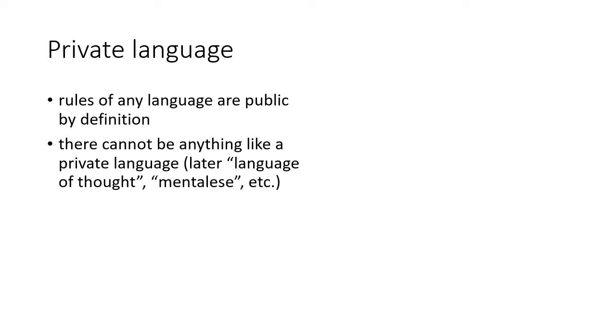From all of this results a very important finding, according to Wittgenstein, which deals with the possibility of private language. According to Wittgenstein, rules of any language must be public by definition. It means that there cannot be anything like private language. There cannot be language that is used just by one person, because its rules wouldn't be public. No one would understand what this language means, and the aim of any language is to communicate meaning.